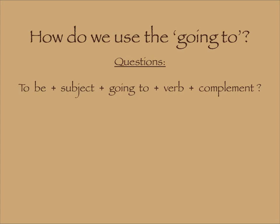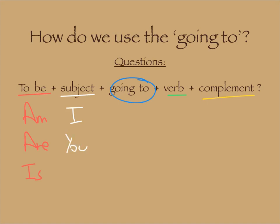How do we use 'going to' to make a question? We put the verb 'to be' first, then the subject — we change the order of these two. Then the same: 'going to' plus the verb plus the complement. We have to make sure we use the right form of the verb 'to be': am I, are you, is he — so 'Am I going to,' 'Are you going to,' 'Is he going to.'